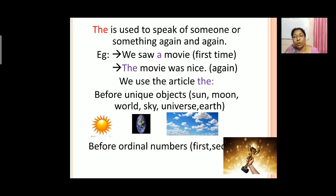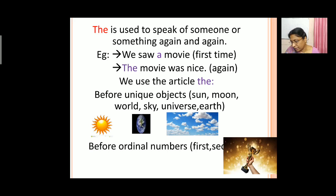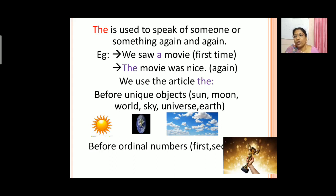Now 'the' is also used before ordinal numbers. So what are these ordinal numbers? That is first, second, third, fourth, fifth, and so on. For example: my brother got the first prize in running race. So when we use these ordinal numbers we use 'the first', 'the second', and so on.